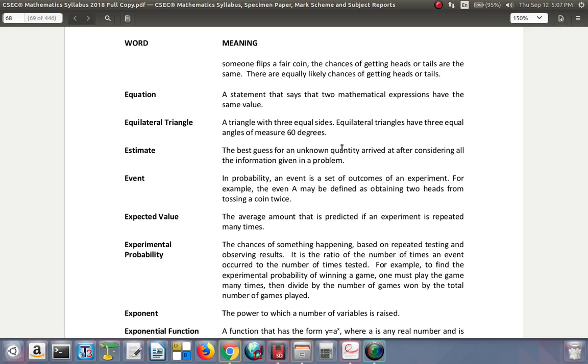Event. In probability, an event is a set of outcomes of an experiment. For example, the event A may be defined as obtaining two heads from tossing a coin twice. So that's an error there. They say the event A, but it should be the event A.